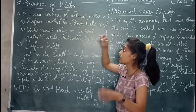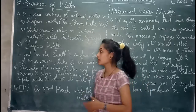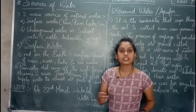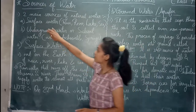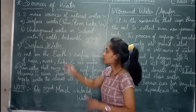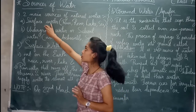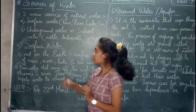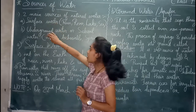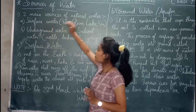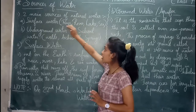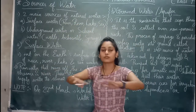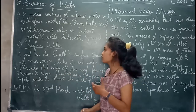There are mainly two sources from where we get natural water: surface water and underground water. In surface water, we have examples such as rain, river, lake, and sea. Water present on the earth's surface is called surface water.